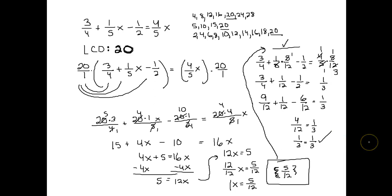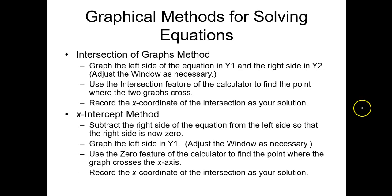The two methods I just showed you are analytical — working them out step by step. Next, I'm going to take that first equation with brackets and parentheses and show you how to use graphing methods to find the solution on your calculator. There are two graphing methods: the intersection of graphs method and the x-intercept method.